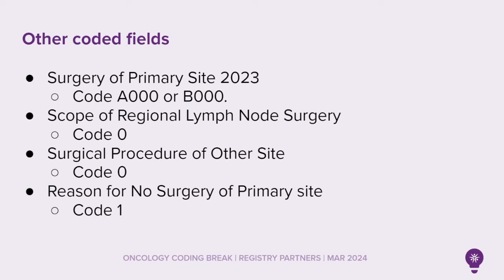Other coded fields include Surgery of Primary Site 2023, code A000 or B000. Scope of Regional Lymph Node Surgery is coded to 0, and Surgical Procedure of Other Site is also coded to 0. Reason for No Surgery of Primary Site would be coded to 1, which means cancer-directed surgery was not performed and not planned as part of treatment as first course.